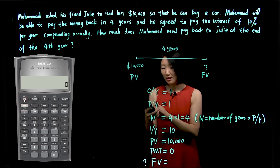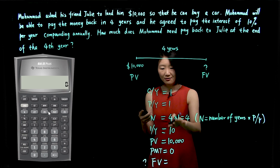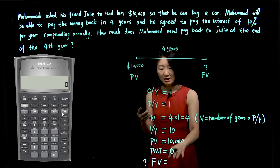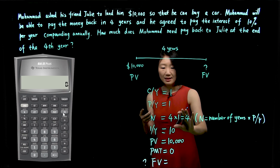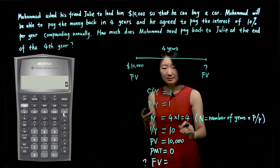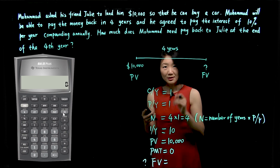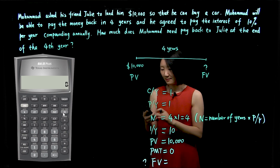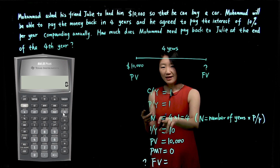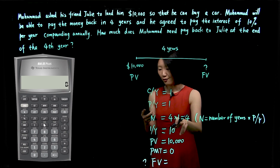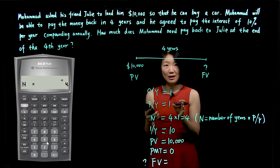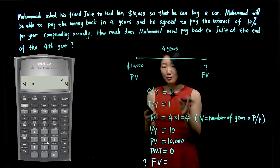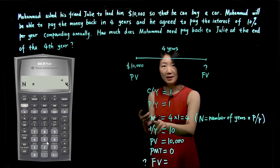Now for this row: N, IY, PV, PMT, and FV. For all these five keys, as long as you know four numbers, you'll be able to calculate the remaining one. Let's enter the value: N is 4, so press 4 and then N. Remember, you have to push the value first and then the button.